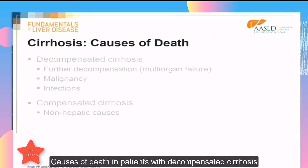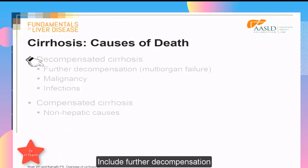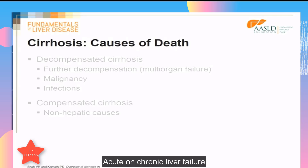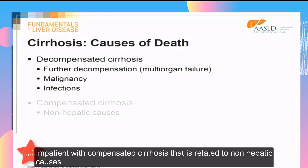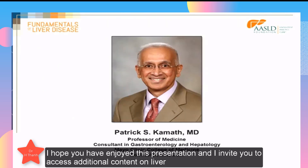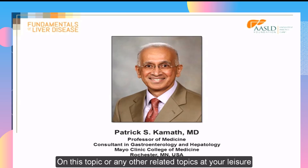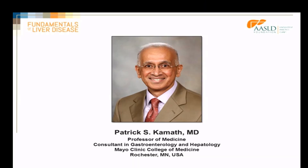The causes of death in patients with decompensated cirrhosis include further decompensation giving rise to multi-organ failure, sometimes termed acute-on-chronic liver failure, malignancy, and infections. In patients with compensated cirrhosis, death is more often related to non-hepatic causes. I hope you have enjoyed this presentation and I invite you to access additional content on liver learning at your leisure. Thank you.